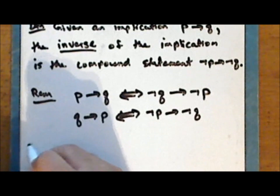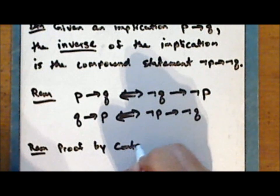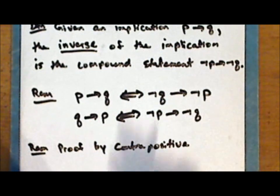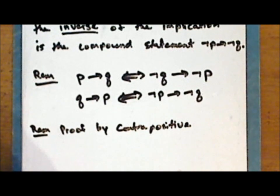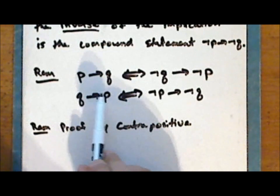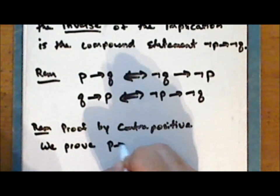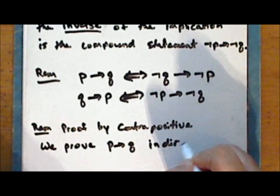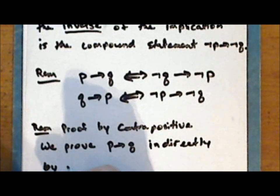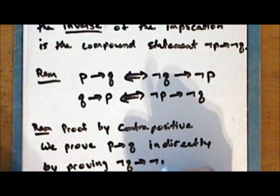One technique of proof is proof by contrapositive. This is a way to prove an implication indirectly. Since the implication is logically equivalent to its contrapositive, we can prove the implication by proving the contrapositive — that is, we prove P implies Q indirectly by proving its contrapositive not Q implies not P. Sometimes this is an easier compound statement to prove.